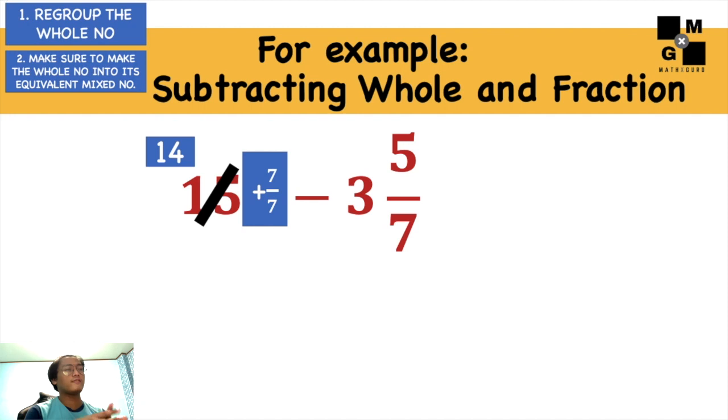The question is, why did I make use of 7 over 7? Why not 8 over 8, or 9 over 9? Because of this one. As you can see in the denominator here, there's 7. So I will make a fraction that is equal to 1 with the same number used in the second fraction. That's why we have 7 over 7.